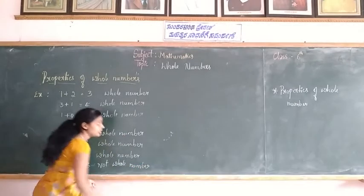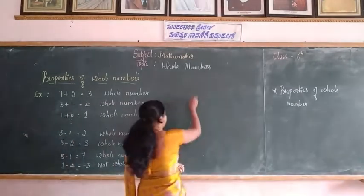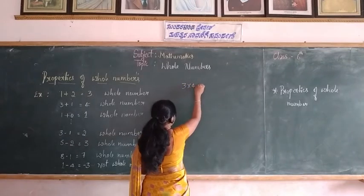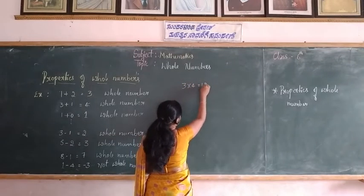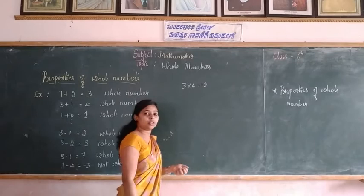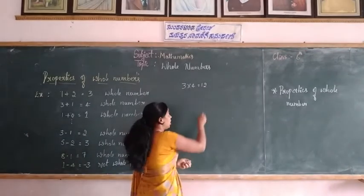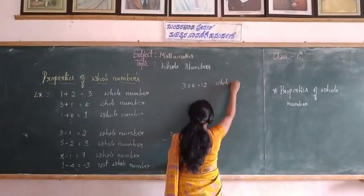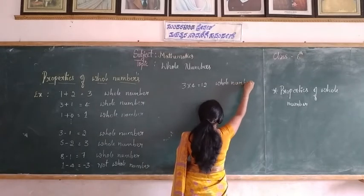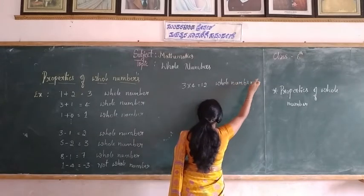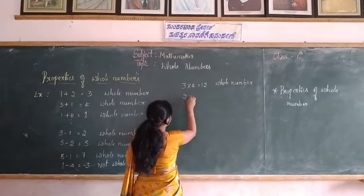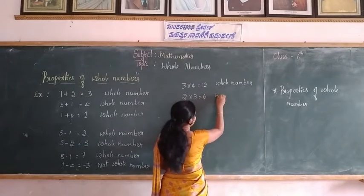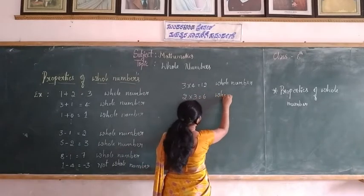Now consider multiplication. 3 into 4 which is equal to 12. When we multiply 3 with 4, we get 12 — it is a whole number. 2 into 3 which is equal to 6 — we get a whole number.